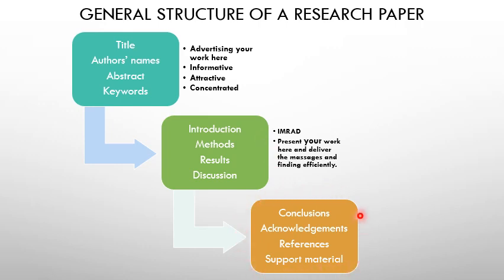The last group consists of the conclusions, acknowledgements, references, and sometimes supporting material. This is the typical structure for any scientific paper. However, some journals mix these up — for example, some journals combine results and discussion into one section.